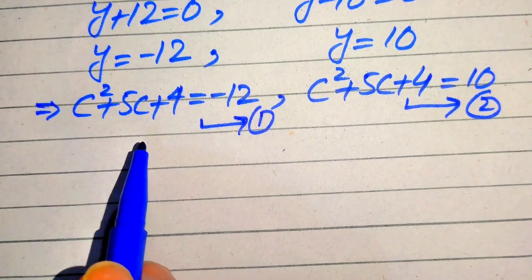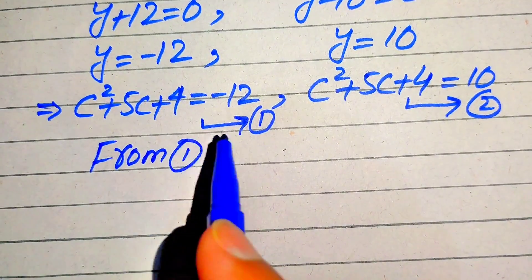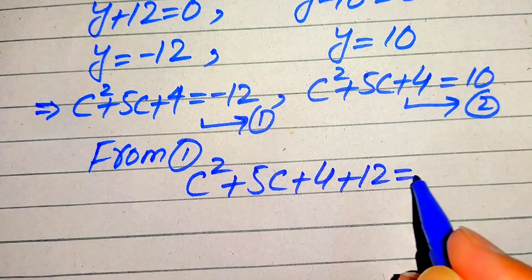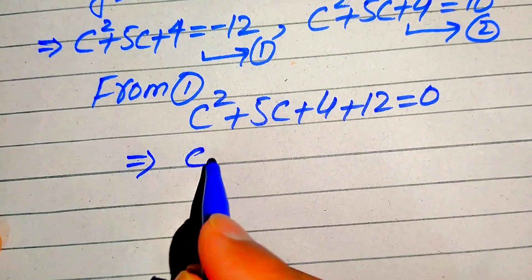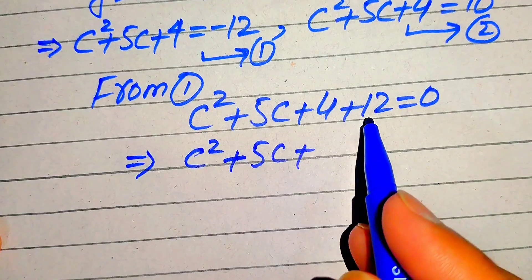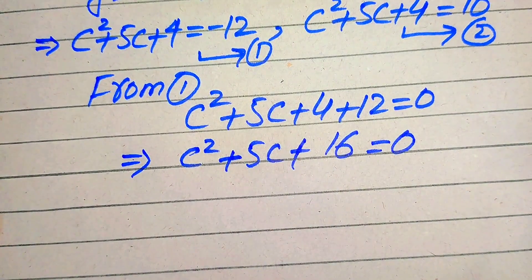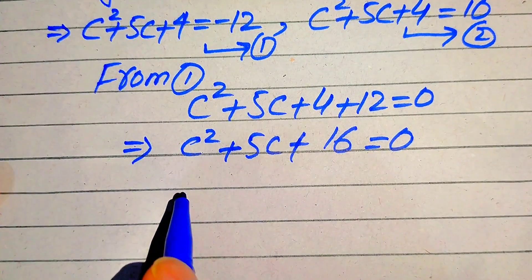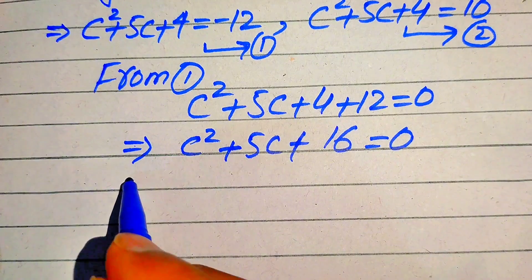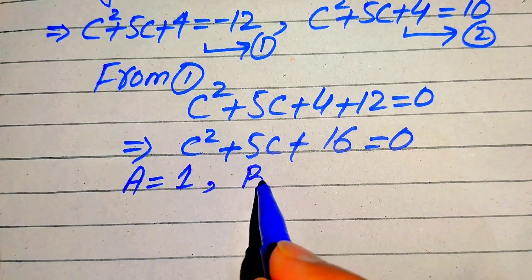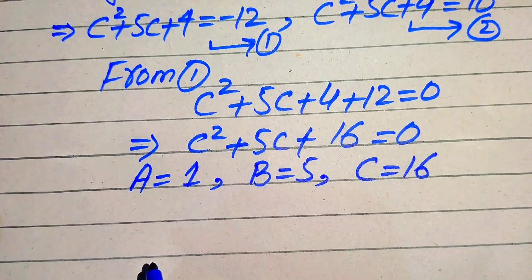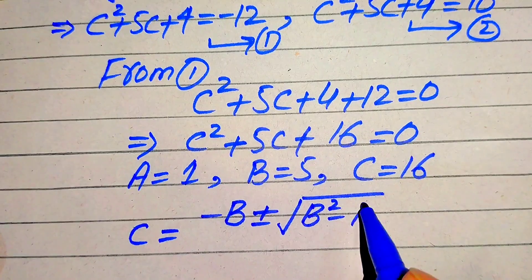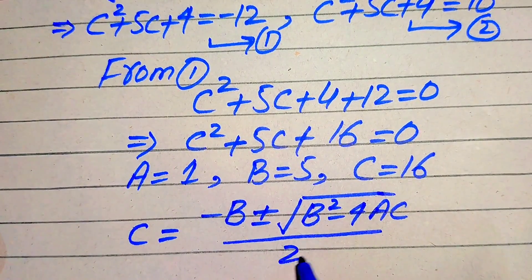Solving Equation 1: moving −12 to the left gives C² + 5C + 16 = 0. Since this cannot be factored, we apply the quadratic formula with A = 1, B = 5, C_coeff = 16. The quadratic formula is C = [−B ± √(B² − 4AC)] / (2A).